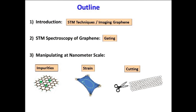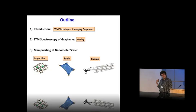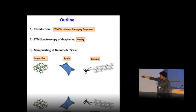Before I get to that, I'll say some introductory words about the techniques we've been using to do this work, which is mainly scanning tunneling microscopy. I'll also say a few introductory words about STM spectroscopy, a technique we have found to be very useful for exploring these kinds of issues in graphene.